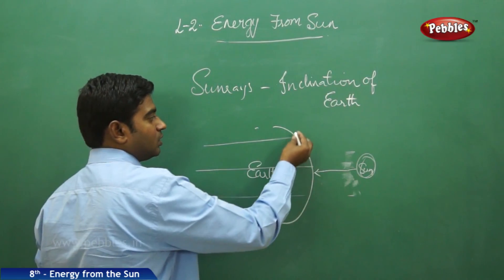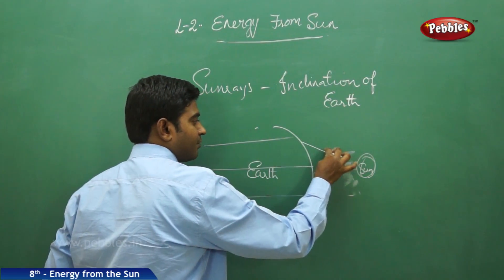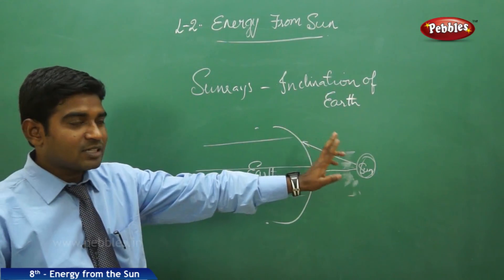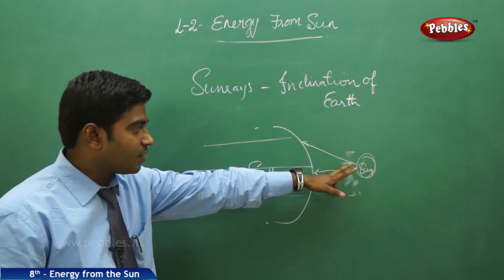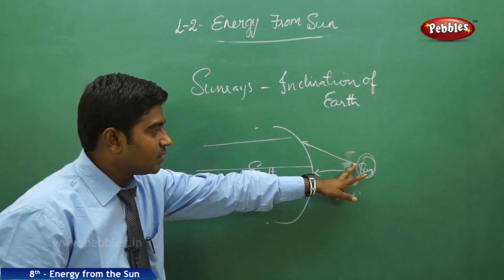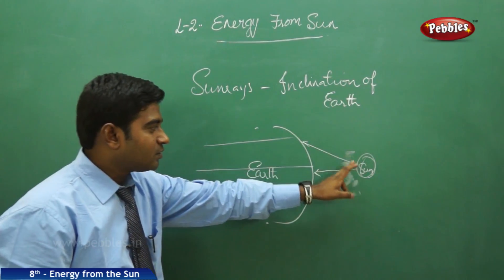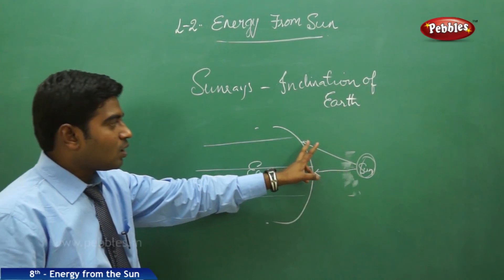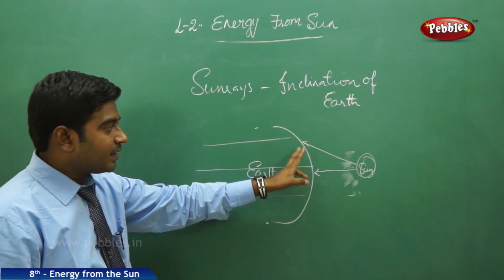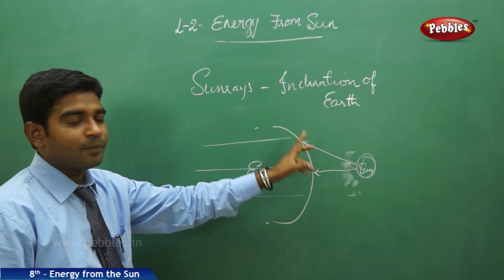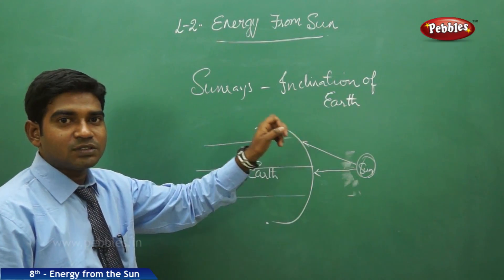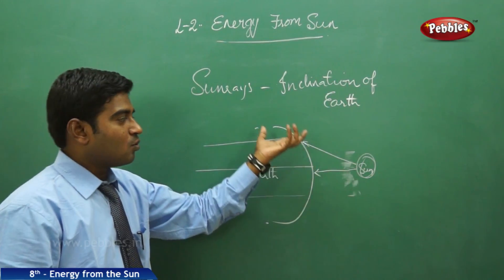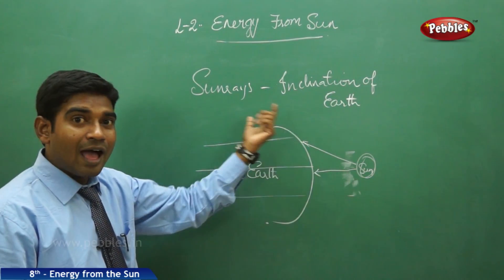But as we move to parts far away from the equator, the distance traveled by the solar energy or waves of sun rays is farther than places nearby the equator. Because of this, it gets diverted into the atmosphere. So the percentage of energy received by places near the equator is more compared to places away from the equator.